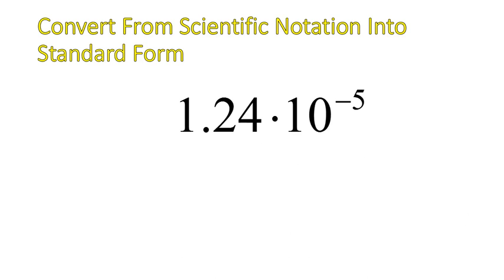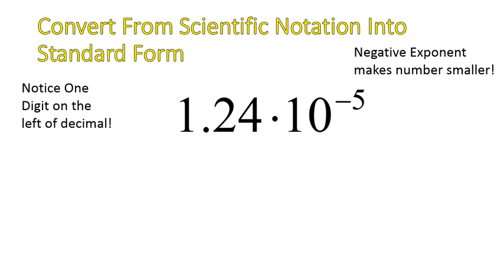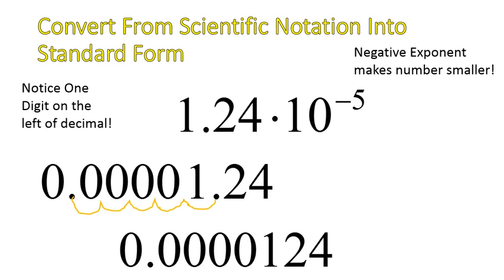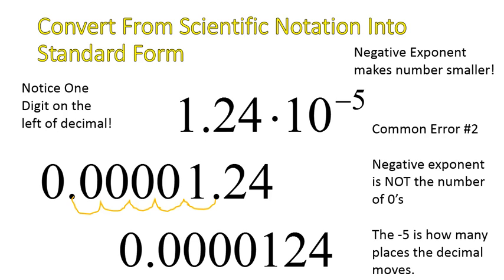Let's look at a negative exponent: 1.24 times 10 to the power of negative 5. Negative exponents make the number smaller — the decimal shifts to the left 1, 2, 3, 4, 5 places. We fill in zeros for every empty place, and our answer is 0.0000124. Again, it is not the number of zeros — it is how many places the decimal moves.